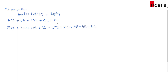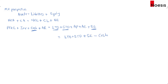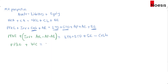Now I'll group the terms to derive the enterprise value formula. On the right-hand side: long-term debt plus short-term debt plus shareholders' equity minus cash. On the left-hand side: property, plant and equipment plus inventory plus accounts receivable minus accounts payable minus accrued expenses. This portion is what we call working capital.